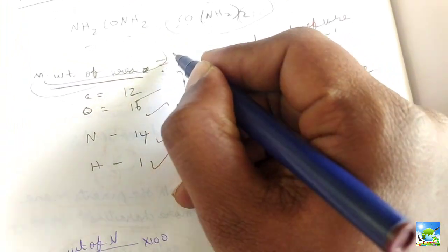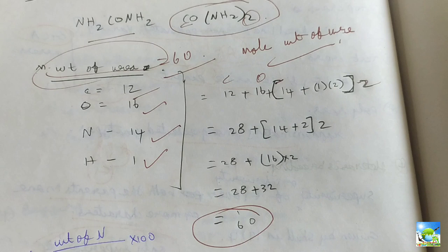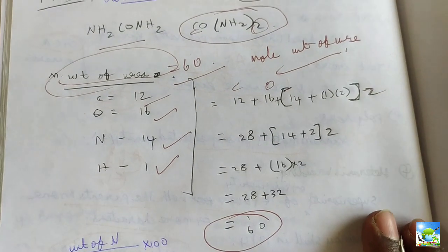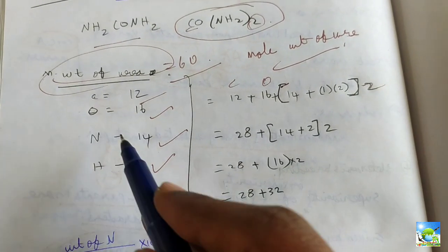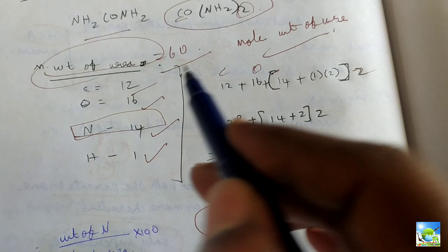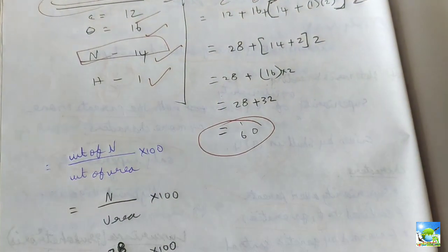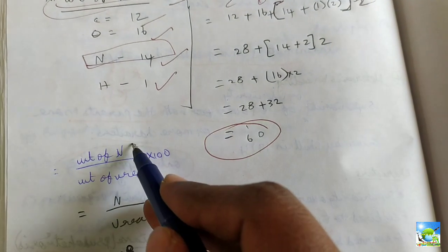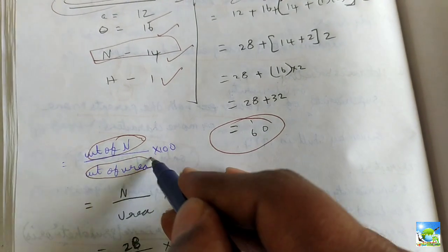We will calculate how the nitrogen is present, that is 46 percentage of nitrogen is present in urea. For this, we need to know the molecular weight of nitrogen. The molecular weight of nitrogen is 14. We use the formula weight of nitrogen divided by molecular weight of urea into 100.